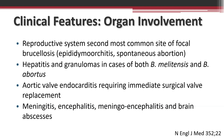Spondylitis is difficult to treat, may result in residual damage, and typically involves the lumbar spine. Other organ involvement includes the reproductive system: focal brucellosis can result in epididymo-orchitis, and in pregnant women can lead to spontaneous abortion. Hepatitis and granulomas can occur. Aortic valve endocarditis can happen and sometimes requires immediate surgical valve replacement. CNS involvement includes meningitis, encephalitis, and brain abscesses.